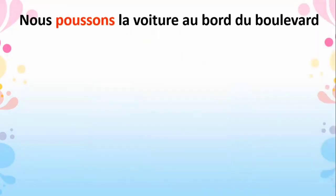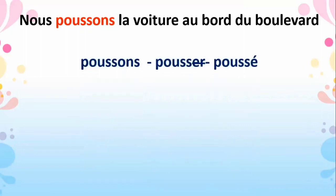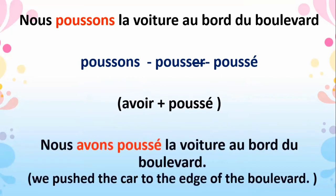Next sentence: 'Nous poussons la voiture au bord du boulevard' — we push the car to the edge of the road. 'Poussons' comes from 'pousser', a regular -er ending verb, so cut the -er and add é. The answer is: nous avons poussé la voiture au bord du boulevard.